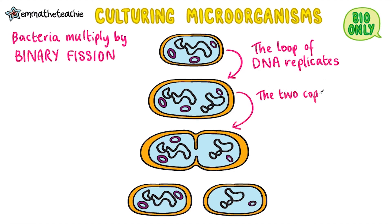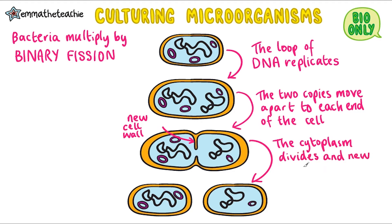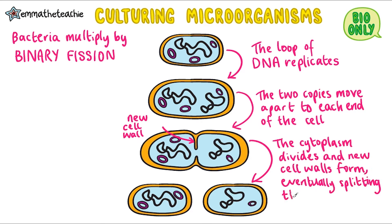The two copies then move apart to opposite ends of the cell. Next, new cell walls form, and in addition to this, the cytoplasm will divide. Eventually, when the walls form in the center, they split off into two cells. You'll notice that there are plasmids, and these aren't split equally between the two cells, so each cell is slightly different.